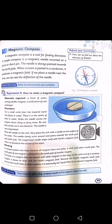Magnetic compass. A magnetic compass is a tool for finding direction. A simple compass is a magnetic needle mounted on a pivot or short pin. The needle is always pointed towards the north pole. When current is passed in a conductor, it produces a magnetic field. If we place a needle near the wire, we can see the deflection of the needle.